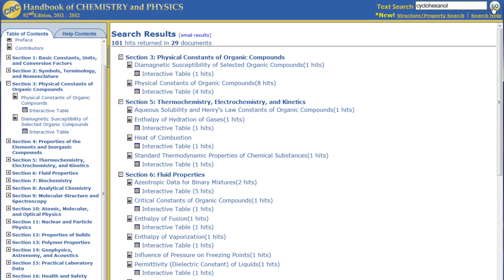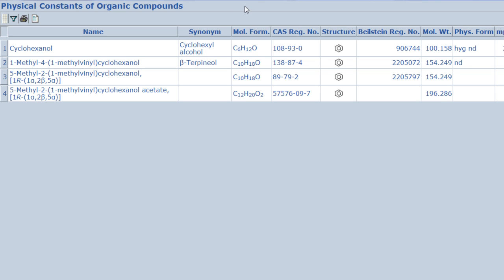The search results page will show you which sections of the handbook contain information about the substance. You will see that the interactive table is still available under the Physical Constants of Organic Compounds section. When clicked on, the table should load much more quickly, since only the portion relevant to your search will be displayed.